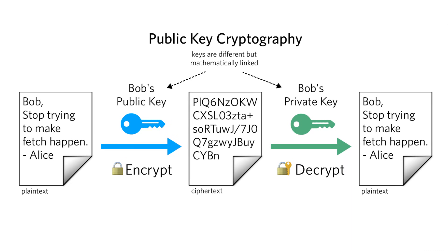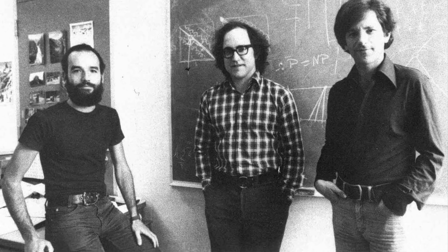So this is where asymmetric encryption, or public key cryptography as it's also called, comes into play. The asymmetric encryption algorithm we're going to look at today is RSA. The name RSA comes from its creators: Ron Rivest, pictured in the middle, Adi Shamir on the left, and Leonard Adelman on the right. These three cryptography geniuses came up with this algorithm.